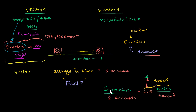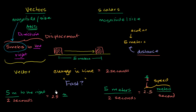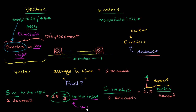Now if we do the same calculation but say it went five meters to the right in two seconds, we get 2.5 meters per second to the right. Is this a vector or a scalar quantity? I'm telling you the magnitude — 2.5 meters per second — and I'm also telling you the direction, to the right. So this is a vector quantity. When you specify both the speed and the direction, you are talking about velocity.